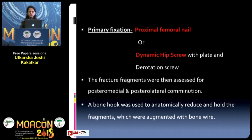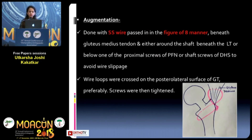Primary fixation was performed using either a PFN or a DHS with derotation screw, and the fracture fragments were then assessed for posterior medial and posterior lateral comminution. A bone hook was used to reduce the fractures and hold the fragments, which were then augmented using a bone wire. The SS wire was passed in a figure-of-8 manner beneath the abductors, around the shaft beneath the lesser trochanter, or below one of the proximal screws of the PFN or the shaft screws of the DHS.